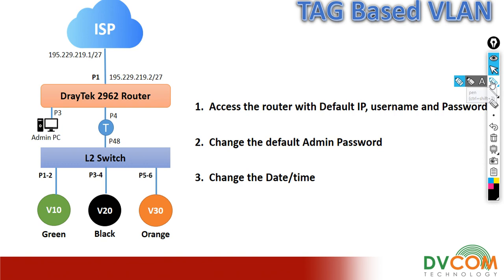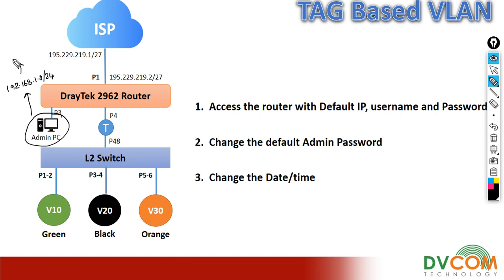In my lab we have a DrayTek Vigor 2962 router, and on port number three our PC is directly connected. By default, port number three belongs to the LAN, and the network is configured as 192.168.1.0. DHCP is enabled on that, so I am going to get an IP address from the DHCP. I will use port three for management purposes, and port number four I am going to connect to my Layer 2 switch on port number 48, which is already configured as a tagged port. This port will carry all VLAN information from the Layer 2 switch to the DrayTek router.